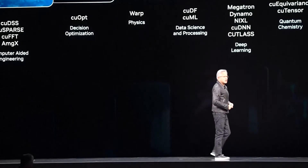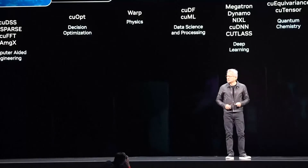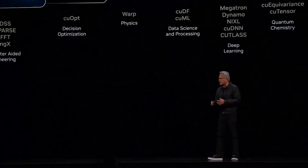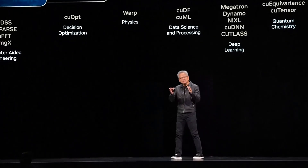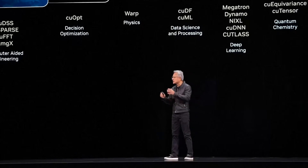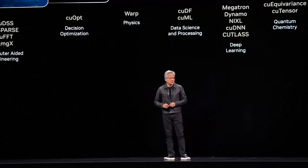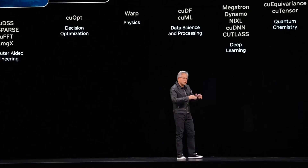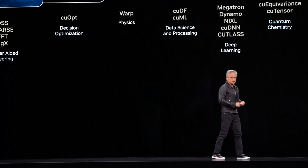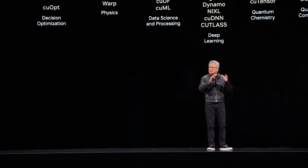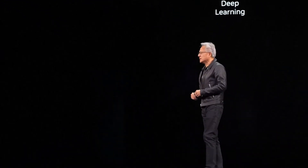This is the treasure of our company. Most people talk about the GPU — the GPU is important — but without a programming model that sits on top of it, and without dedication to that programming model, keeping it compatible over generations... We're now on CUDA 13, coming up on CUDA 14. Hundreds of millions of GPUs running in every single computer, perfectly compatible. If we didn't do that, developers wouldn't target this computing platform.